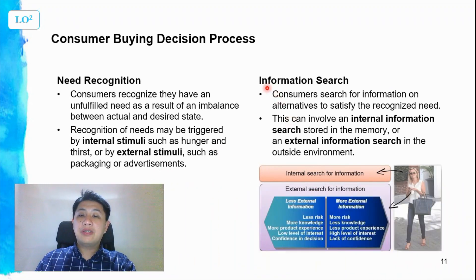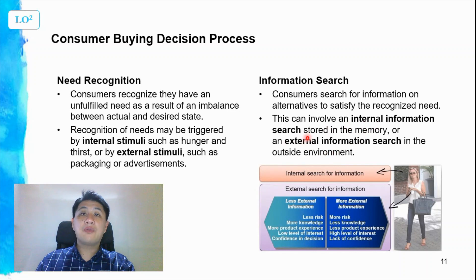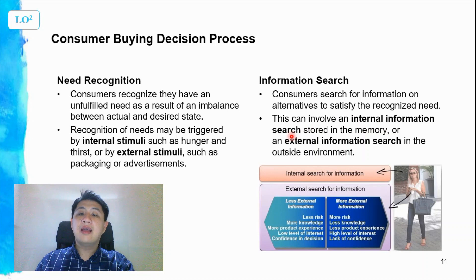Following need recognition, you have information search. The aim of information search is to satisfy the recognized need. It can be internal — stored in your memory — or external, from the outside environment. Internal search applies to products you purchase frequently, like a snack or a meal, where you draw on past experience. In contrast, buying a laptop for the first time involves external information search — looking at product attributes, asking friends, and searching online.